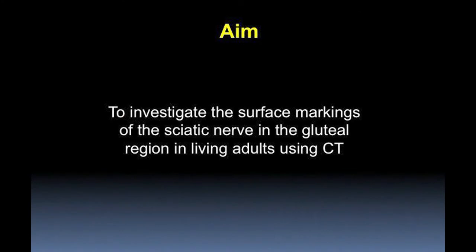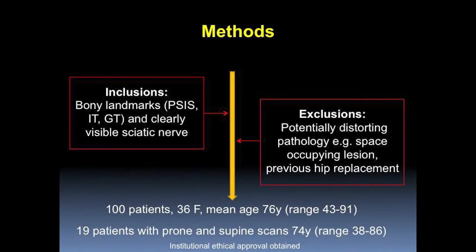The aim of this study is to investigate the surface markings of the sciatic nerve in the gluteal region in living adults using CT scan. Our radiology resident will explain the method, results, and conclusion. Using CT scans of the abdomen and CT colonographies, we were able to identify the sciatic nerve in relation to the bony landmarks.